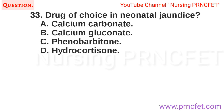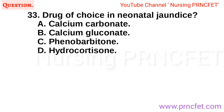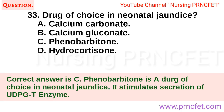Question 33: Drug of choice in neonatal jaundice: A. Calcium carbonate. B. Calcium gluconate. C. Phenobarbitone. D. Hydrocortisone. Correct answer is C. Phenobarbitone is the drug of choice in neonatal jaundice. It stimulates secretion of the UDP-glucuronosyltransferase (UDP-PGT) enzyme.